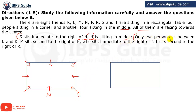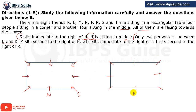Only two persons sit between N and K. So there are two persons between N and K — K can be to the right of N or to the left of N, giving two possibilities. I am making both possibilities so we can solve this as fast as possible. In one case I am putting K here; in the other case I am putting K here.